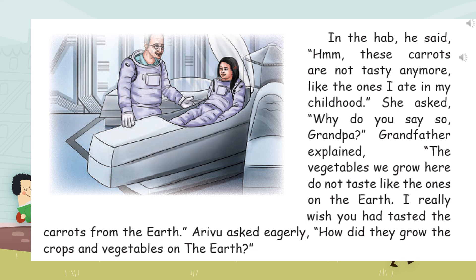Let me explain this paragraph. In the HAB, grandfather and the child were talking to each other. Grandfather said, 'See these carrots over here, which are from Mars — they are not at all fresh, not tasty at all. You should have tasted the ones from Earth.' On Earth we have natural vegetation — God has gifted us with vegetation. But in Mars, they are trying to grow vegetation artificially. Grandfather is saying the vegetables from Earth are tastier than the ones from Mars, and the child asks how grandfather grew vegetables on Earth.